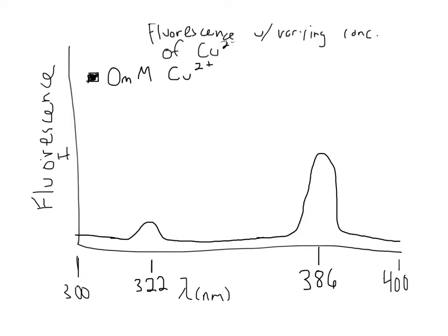That's what the emission spectra looks like without copper. Now with copper — this is part B — it says that copper quenches the signal of the acceptor. It doesn't say anything about the signal of the donor, so we're going to leave that the same. But since it quenches the acceptor signal, a small amount of copper will make that signal a little bit lower in intensity.